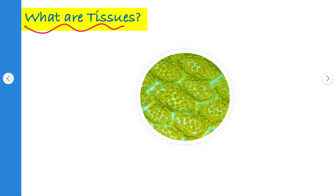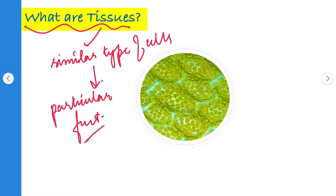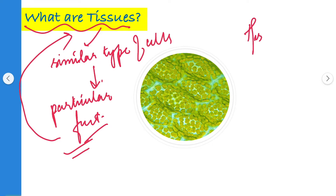So what are tissues? Tissues are similar type of cells. They group together to perform a particular function. When many similar types of cells are grouped together and perform a particular function, they are called as the tissues. And the study of tissues is called as histology.